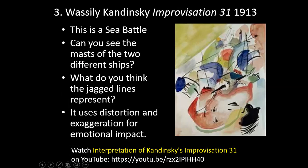Number three — Wassily Kandinsky, Improvisation 31, painted in 1913. This is a sea battle. Can you see the masts of the two different ships? What do you think the jagged lines represent? It uses distortion and exaggeration for emotional impact. If you'd like to learn more, you can watch Interpretation of Kandinsky's Improvisation 31 on YouTube.